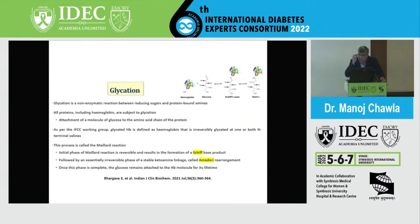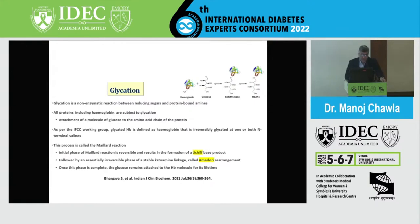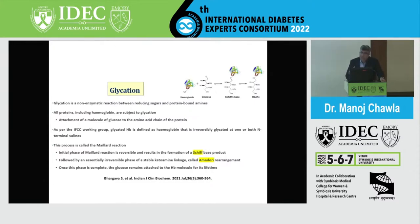Glycation is a non-enzymatic reaction between reducing sugars and protein-bound amines. All proteins in the body, including hemoglobin, are subject to glycation — the attachment of a glucose molecule to the amino acid chain. As per the IFCC working group, glycated hemoglobin is defined as hemoglobin irreversibly glycated at one or both N-terminal valines. This process is called the Maillard reaction. The initial phase is reversible, forming a Schiff base, followed by an amadori rearrangement creating an irreversible bond.